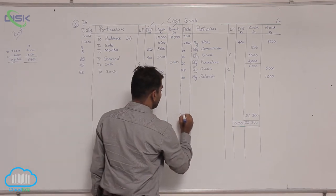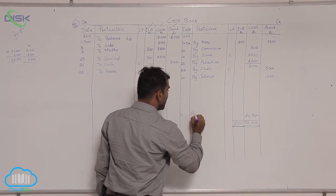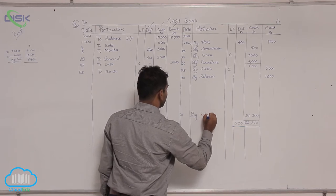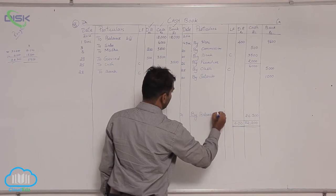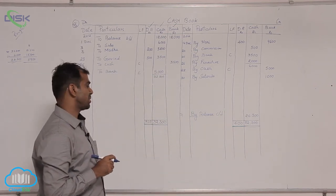So 31st December is the date. It is the closing balance. So balance is entered on credit side because closing, we will use the word carried down. That is for cash.